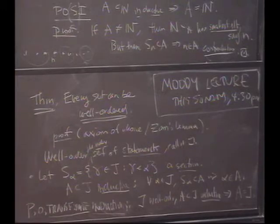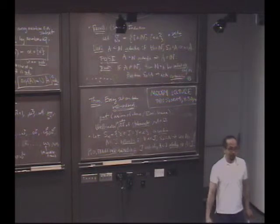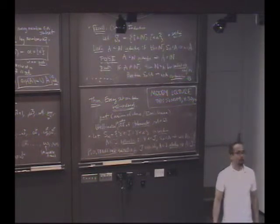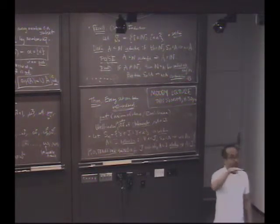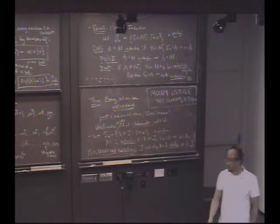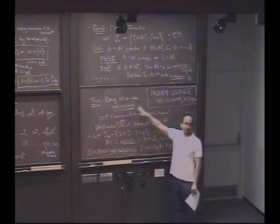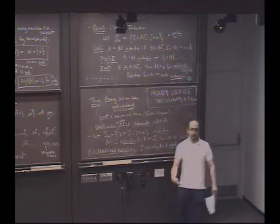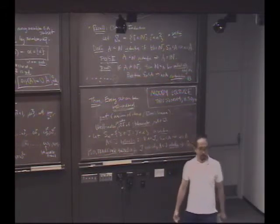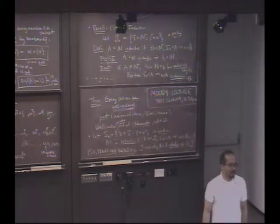It's not well-ordered with the given order. But we can find an order that will turn the set of real numbers in the interval 0, 1 into a well-ordered set. Now, of course, the axiom of choice is, and this isn't a constructive argument, right? So, I mean, nobody can give you an explicit well-ordering of the real numbers, right? But there exists one.